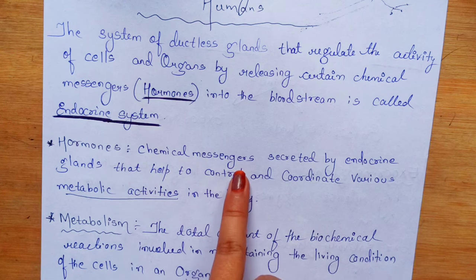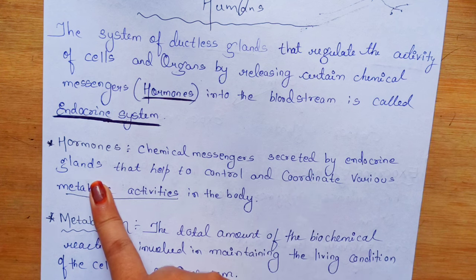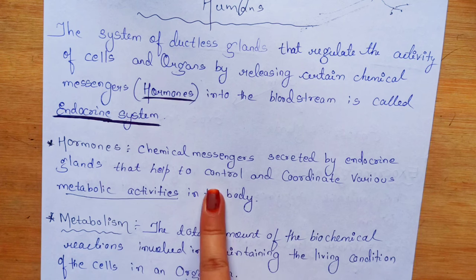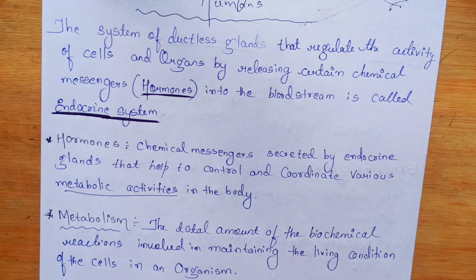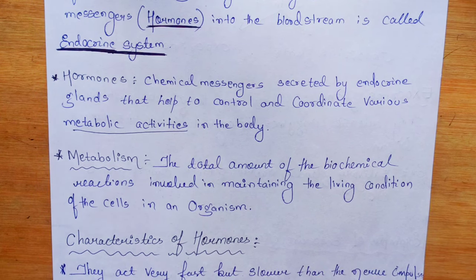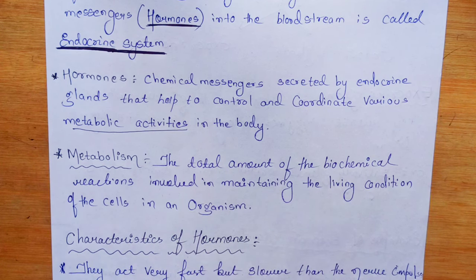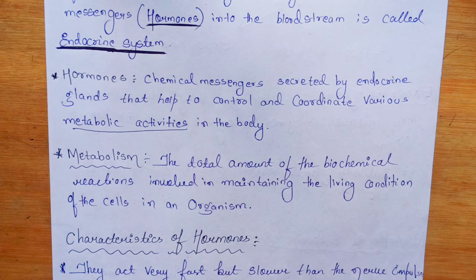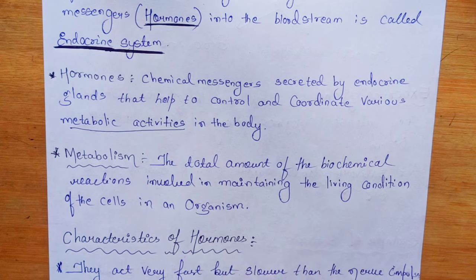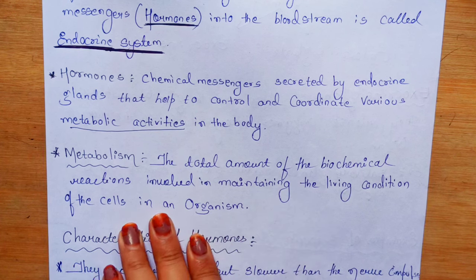So hormones are chemical messengers, secreted by endocrine glands, which help to control and coordinate various metabolic activities. Metabolism means the total amount of biochemical reactions involved in maintaining the living condition of cells in an organism — like fats and proteins breaking down in digestion — all of these maintain our living condition.